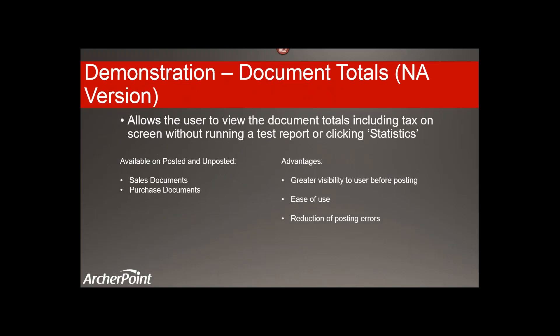Our first topic is document totals in the North American version. This new feature allows the user to view the document totals, including tax, on the screen without running a test report or clicking statistics. Currently, this is available on posted and unposted sales and purchase documents. The advantages are that you have visibility right on the screen, you don't have to go to another menu for statistics, ease of use, and reduction of posting errors. If the totals don't look right, you can make a correction before posting.